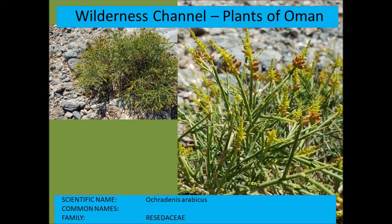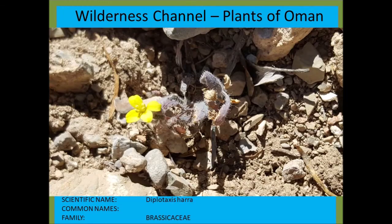Ochradenus arabicus — a very characteristic bush with yellow flowers. Diplotaxis harra — the hairy flower from the Brassicaceae or mustard family.